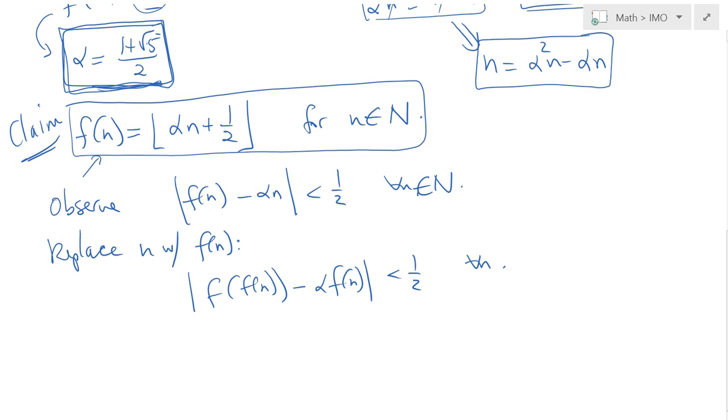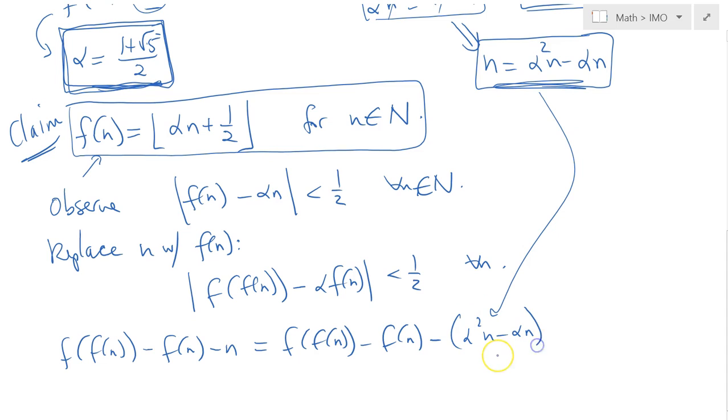Let's do the following: consider that n is simply equal to alpha squared n minus alpha n. Let's keep that in mind. So therefore, if we start with f(f(n)) minus f(n) minus n, that expression for our function would simply be f(f(n)) minus f(n), and let's replace the n with this expression here: alpha squared n minus alpha n. Now I will make a small trick, a factorization trick if you will. I will split it as follows: f(f(n)) minus alpha f(n) plus alpha minus 1 times f(n) minus alpha n, and please go ahead and confirm that this equality is true.